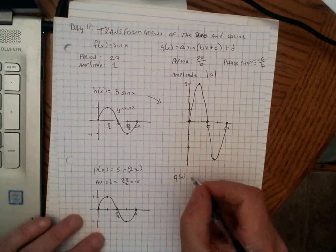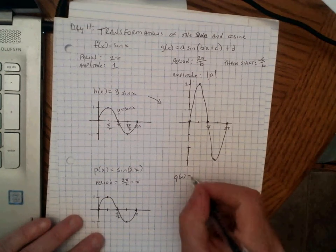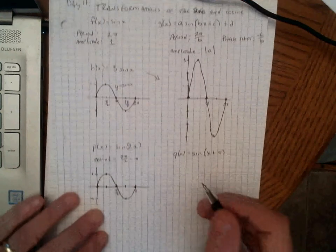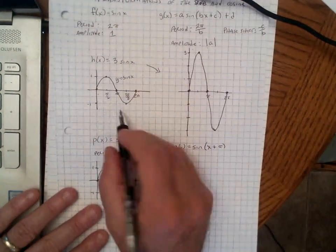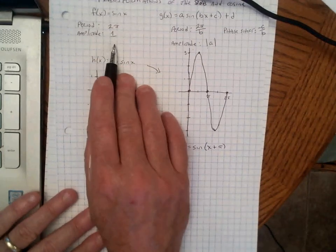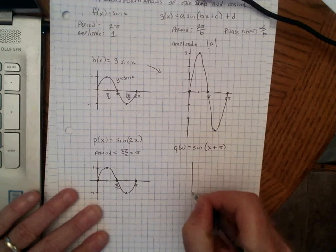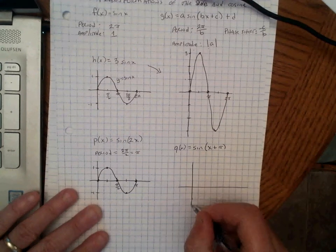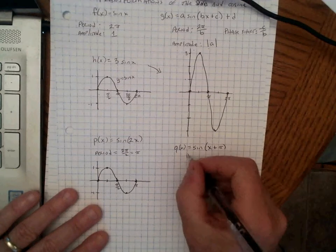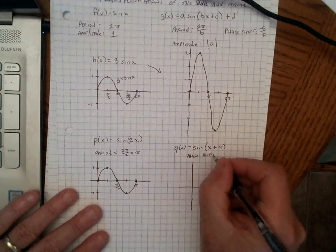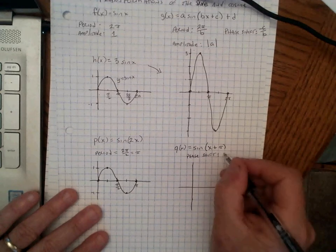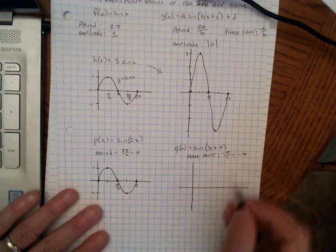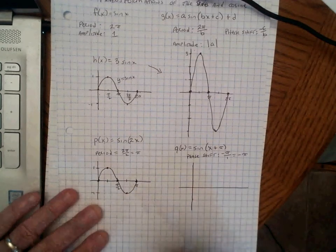Let's look at an example. Let's say we have q of x equals sine of x plus pi. The period and amplitude are still those of the original sine function — period 2 pi, amplitude 1. The phase shift is the opposite of c divided by b. C is pi, and b is 1, so the phase shift is negative pi, meaning it shifts the graph pi units to the left.